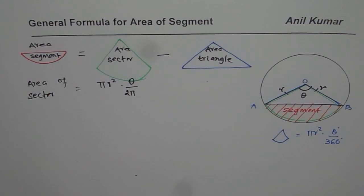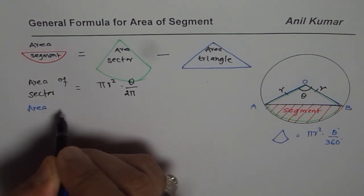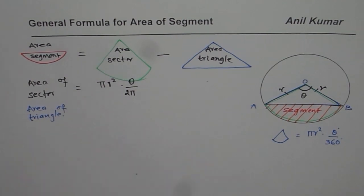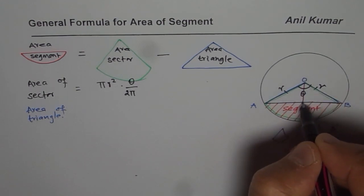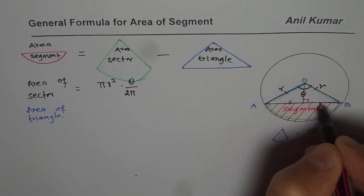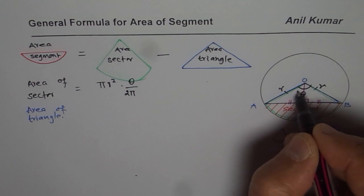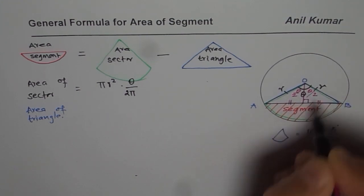Now, the other thing is area of triangle. Area of triangle is kind of tricky here. To find area of the triangle, you have to drop a perpendicular from the center. As soon as you drop the perpendicular, these two sides will be divided into two equal parts. And the angle will be divided into half. So we have theta by 2.